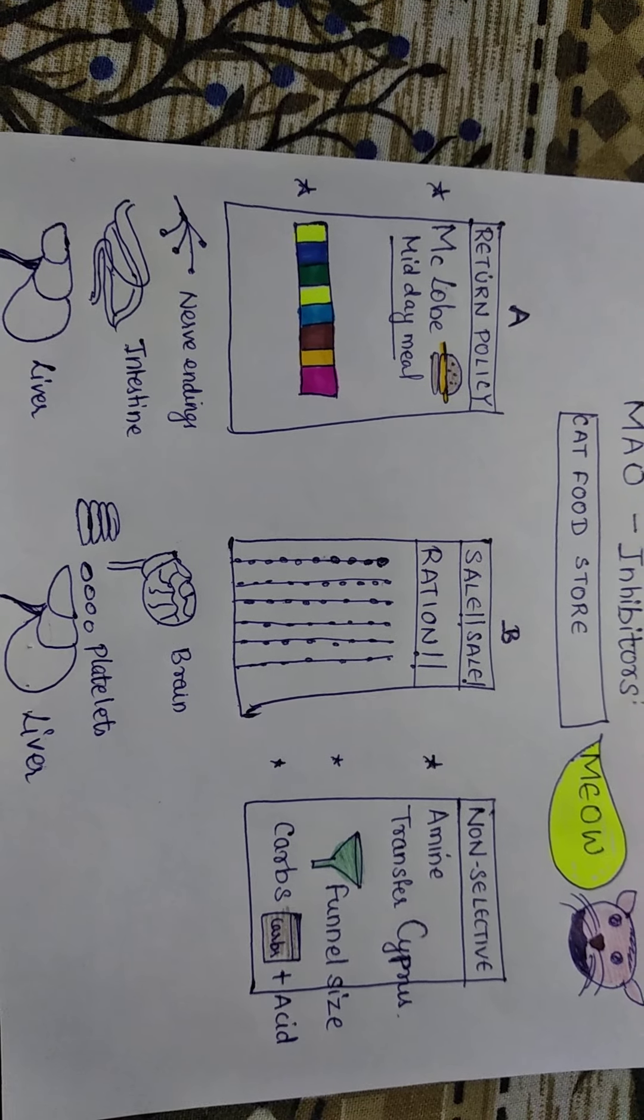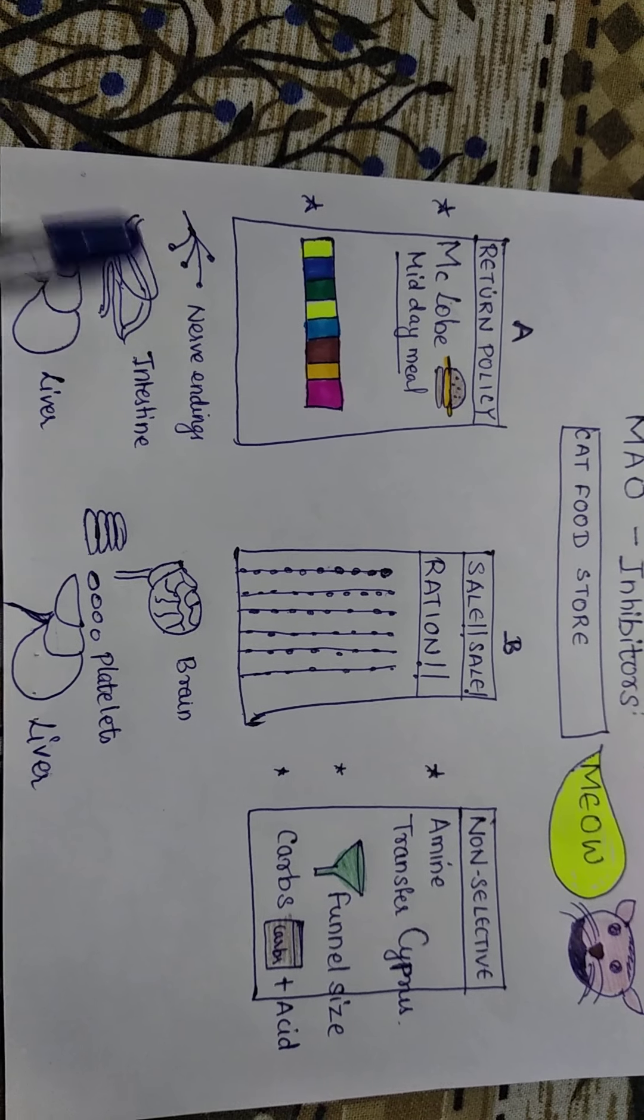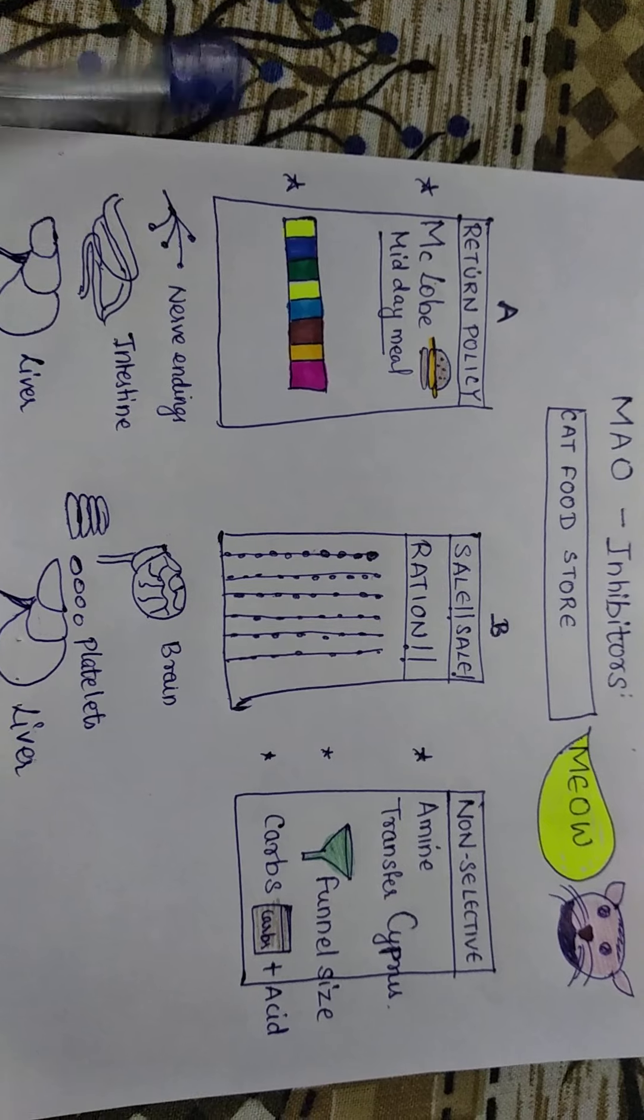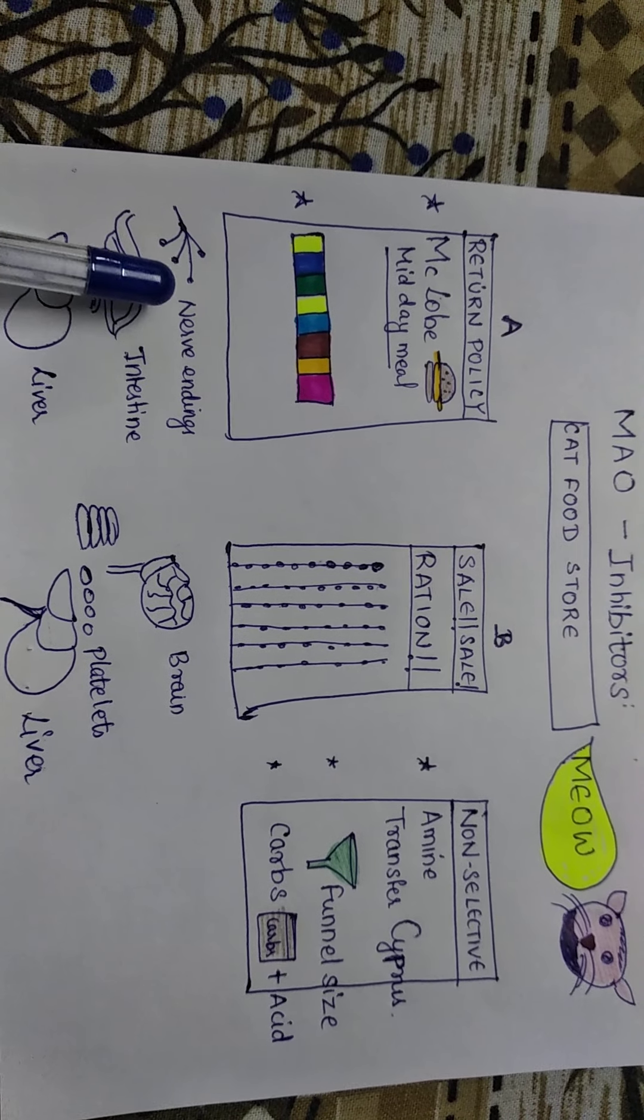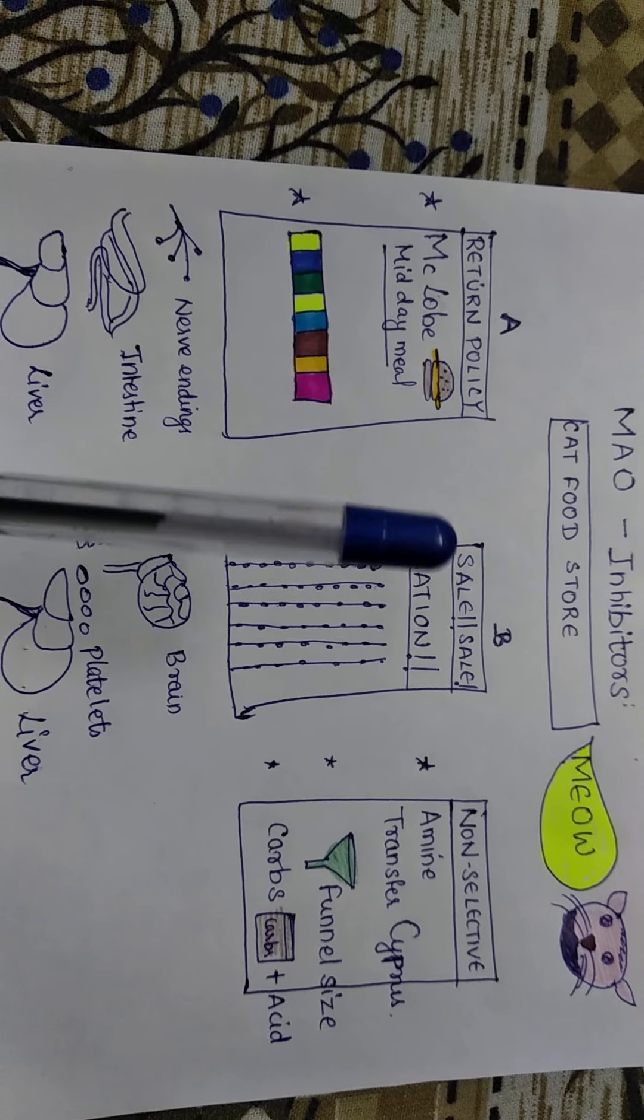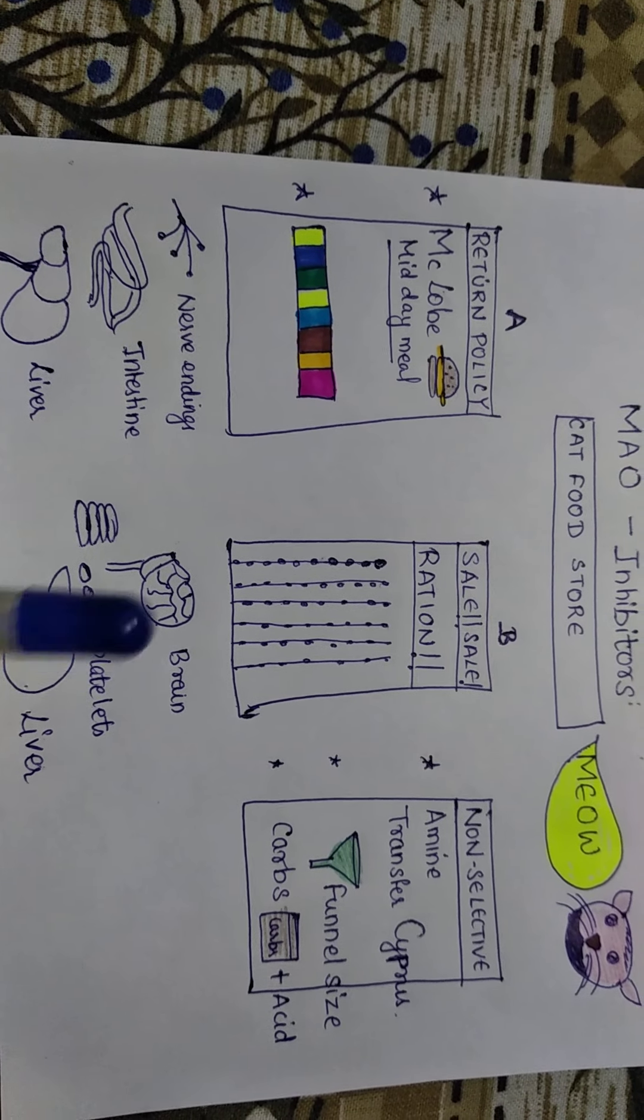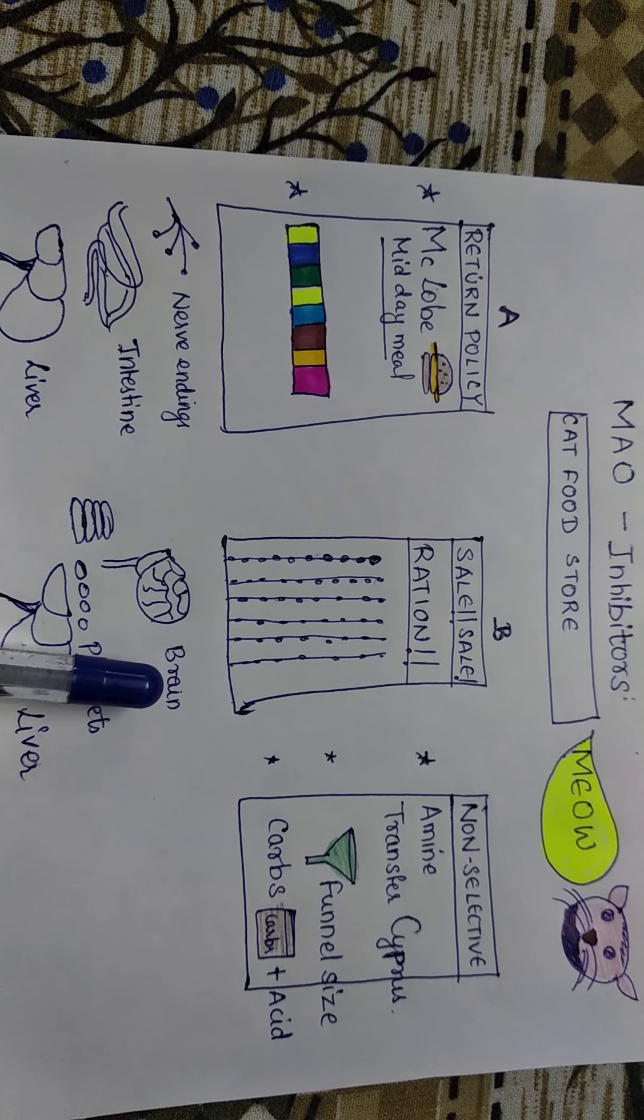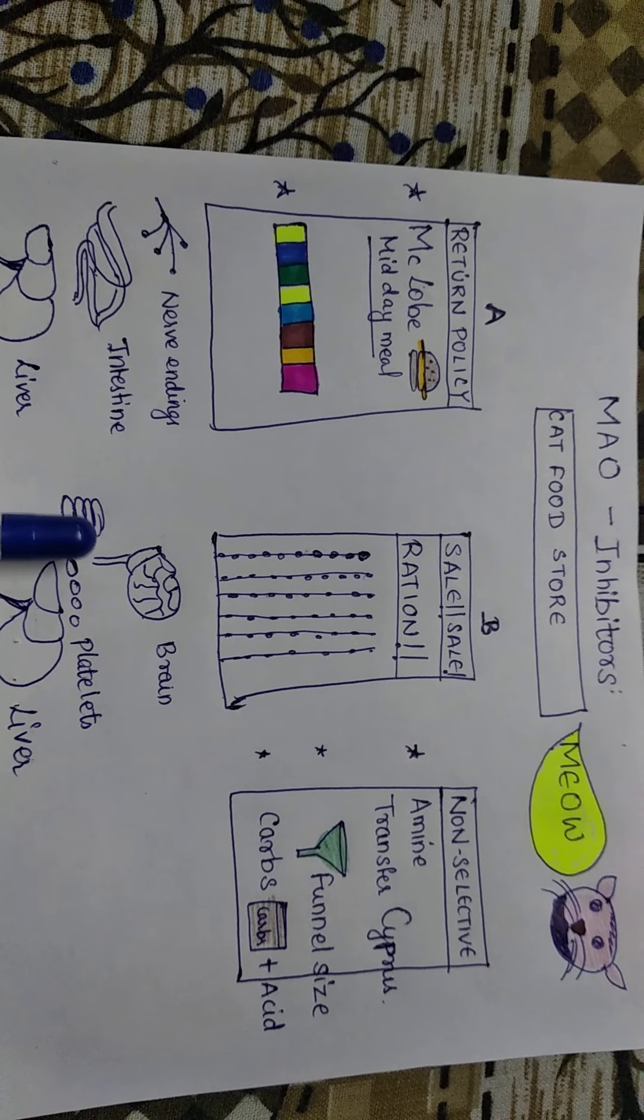A, that is the monoamine oxidase A enzyme is found on nerve endings, intestine, and liver. The food which is under this is rich in nutrients, is good for your cat's nerve endings, intestine, and liver. And the food available in B section is good for brain, brain of the cat which is served on the plate. Plate is platelets, and liver.